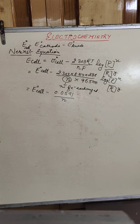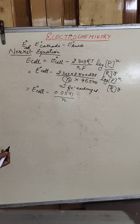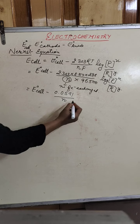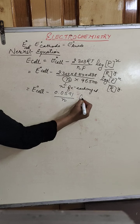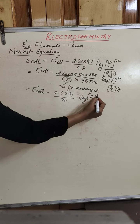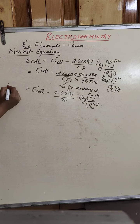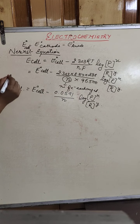Here, N depends upon the cell — specifically how many electrons are exchanged. The log term is the concentration of products raised to power X divided by concentration of reactants raised to power Y. This is the simplified form of the Nernst equation used to calculate the EMF of the cell.